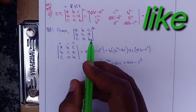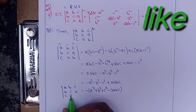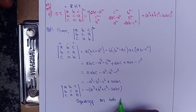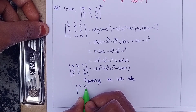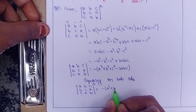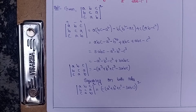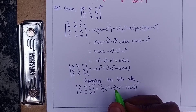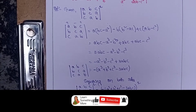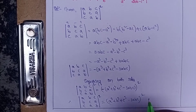Now, squaring on both sides: the determinant of [a,b,c; b,c,a; c,a,b] whole square equals minus of (a³ + b³ + c³ - 3abc). Squaring both sides, minus times minus gives plus. Therefore the determinant of [a,b,c; b,c,a; c,a,b] whole square equals (a³ + b³ + c³ - 3abc)². Case one is complete.